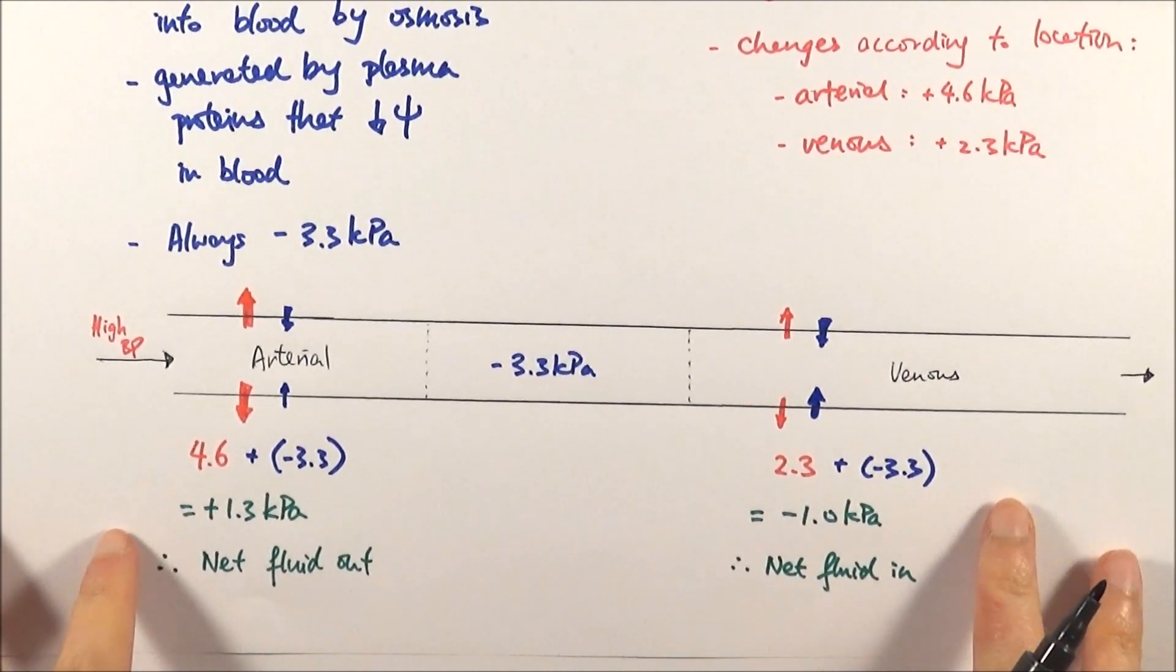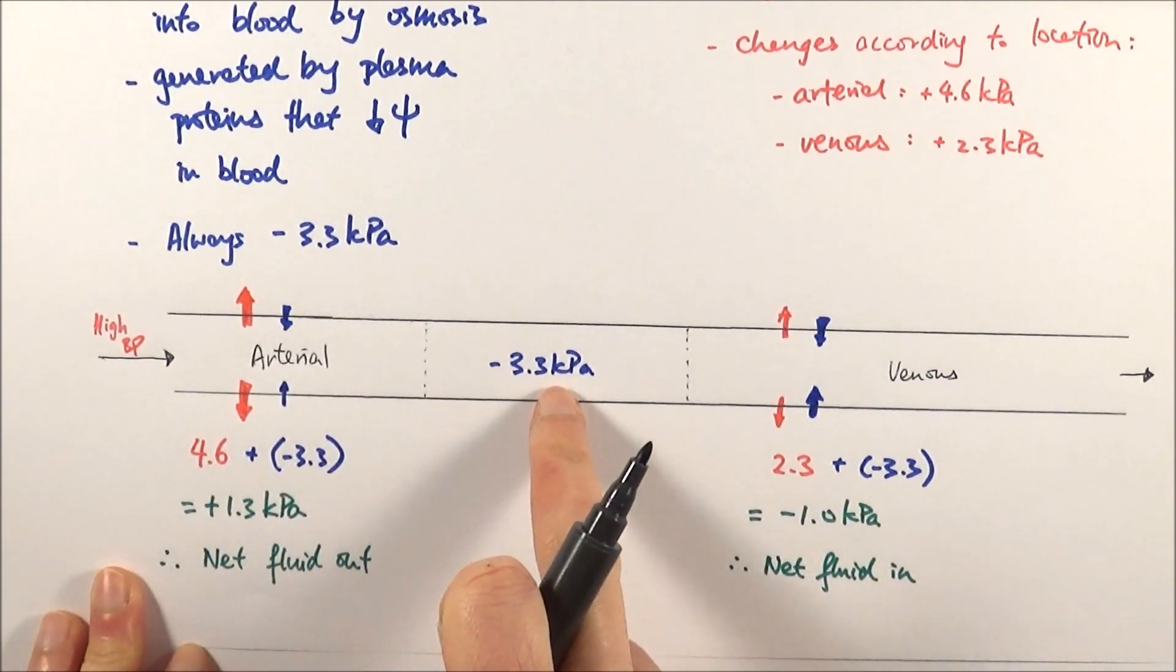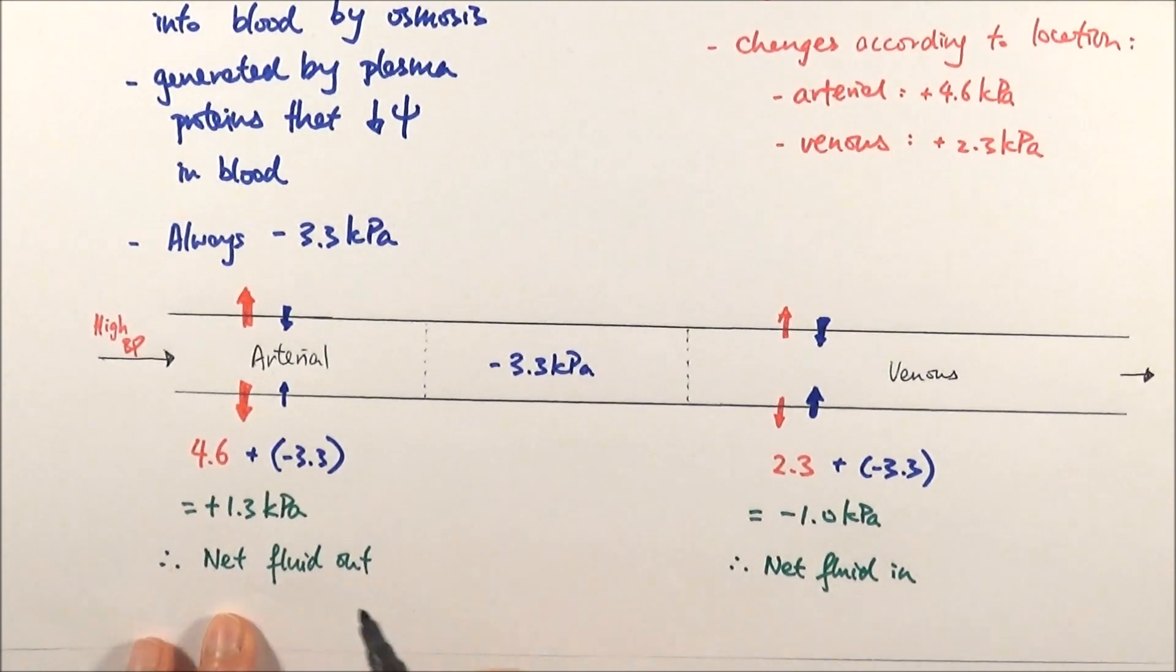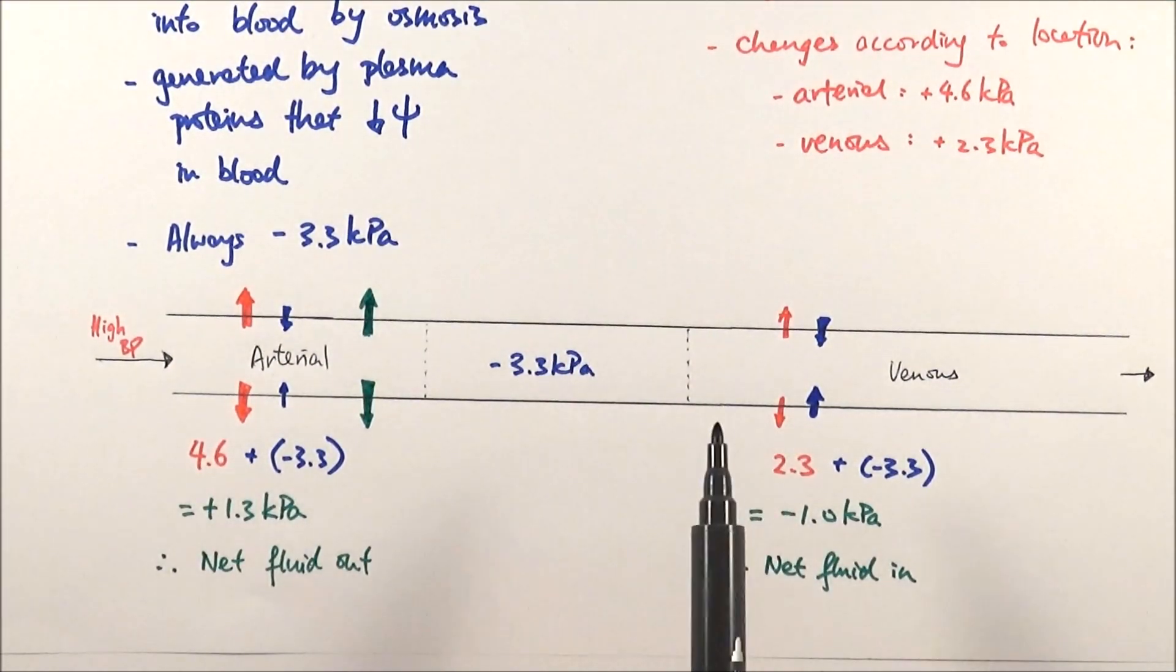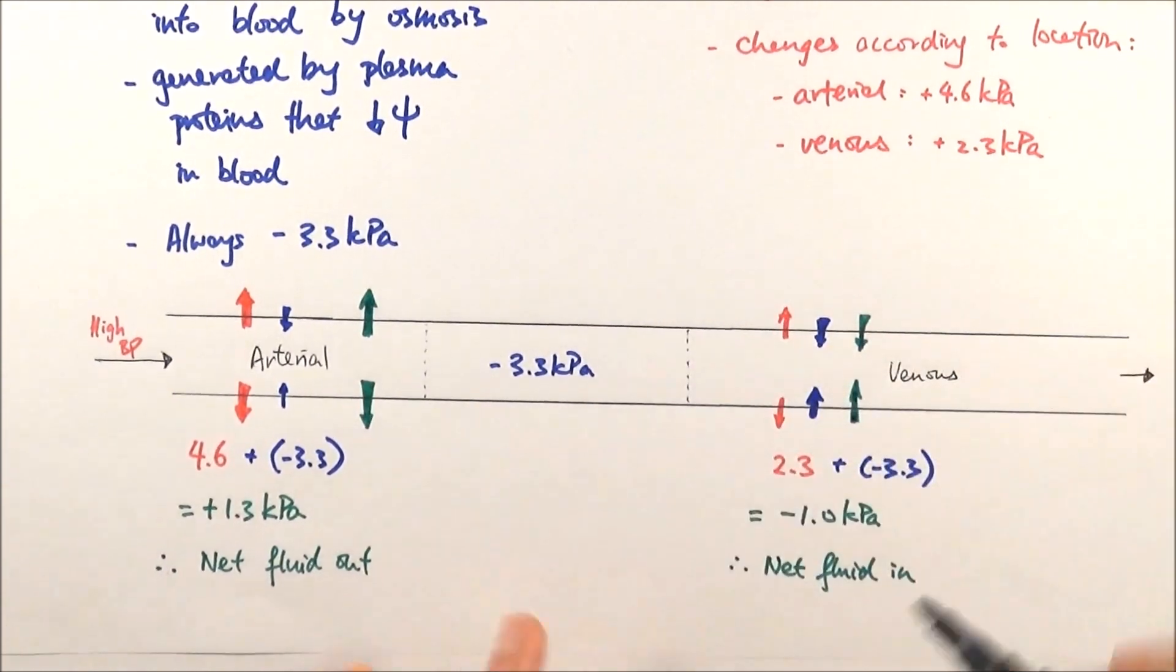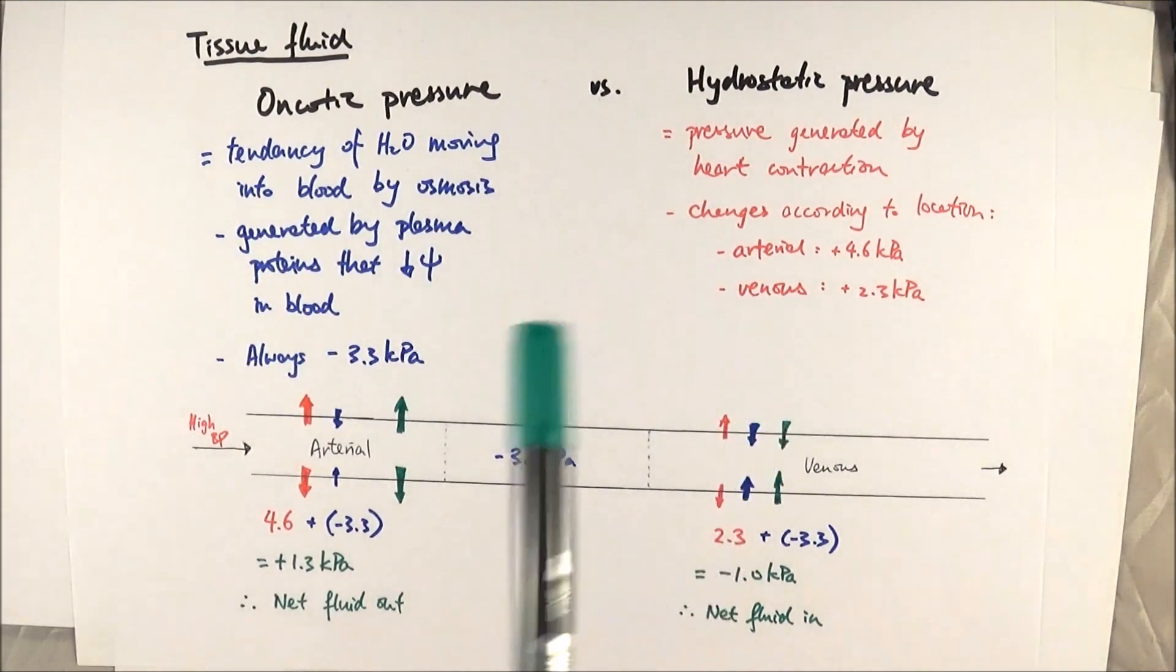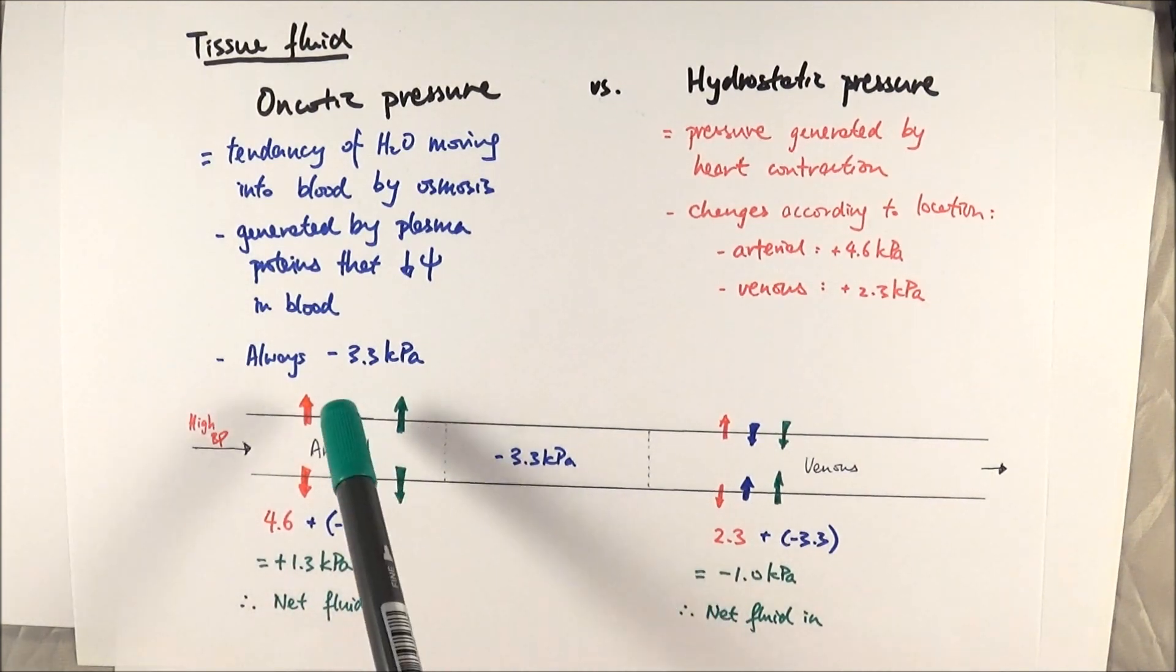This is how tissue fluid is formed. Quick recap: at the arterial end, high blood pressure means high hydrostatic pressure. Compared to oncotic pressure, we get a positive pressure overall, so fluid moves out. At the venous end, after losing that high blood pressure, we have lower hydrostatic pressure. Compared to oncotic pressure, we've got negative filtration pressure, so net fluid moves back in, bringing waste products back into the blood to be transported away to the heart and removed in various organs. Tissue fluid is made depending on oncotic pressure and hydrostatic pressure—we compare the two to find out how it's made and how fluid goes back in to be transported away in the blood.